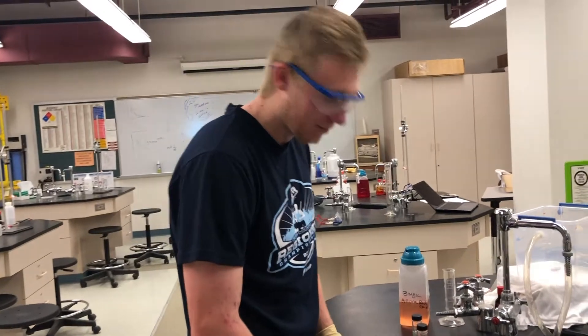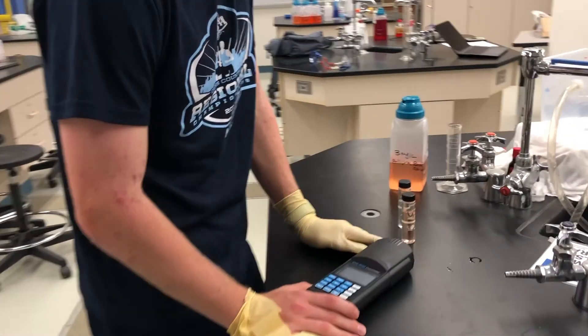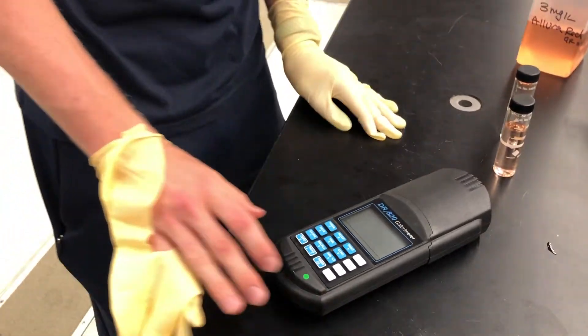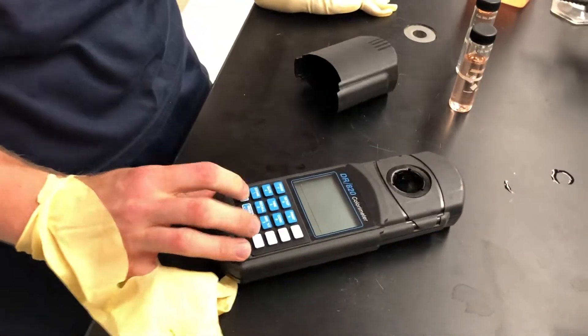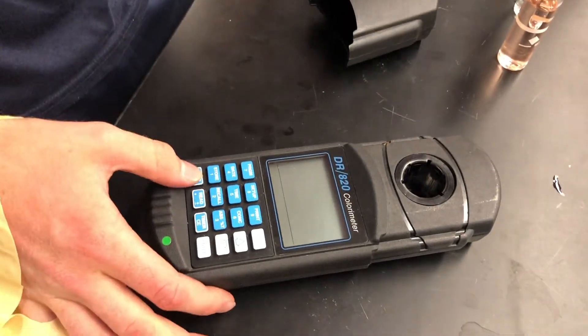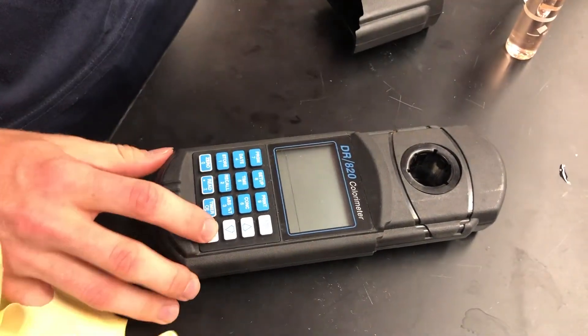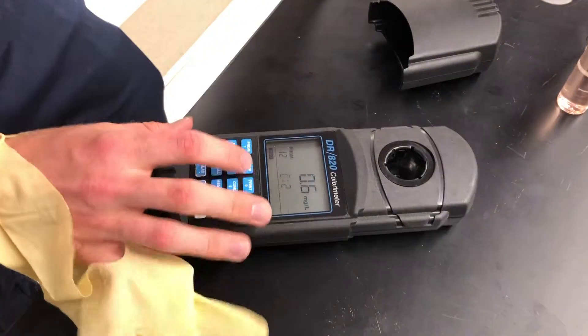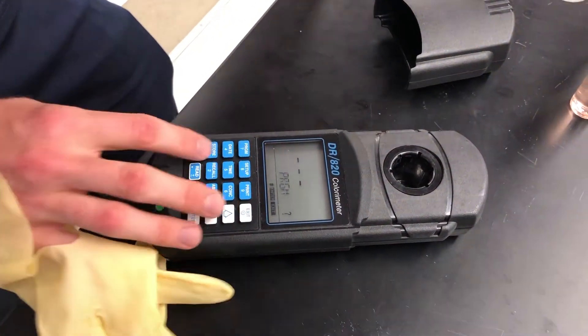So here we have the Hatch Meter. We use this to measure the absorbance for the data. So here we remove this, and we're going to turn it on. There we go. Okay. Here we go. And so we have to go to program 12.